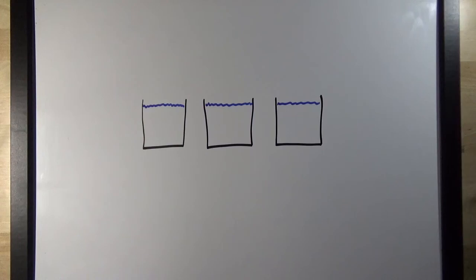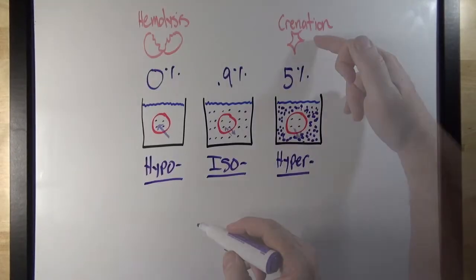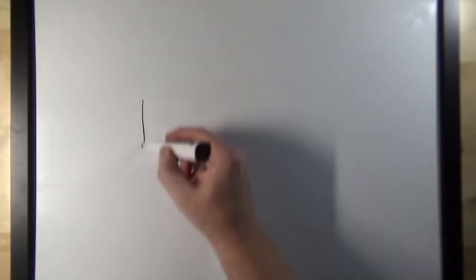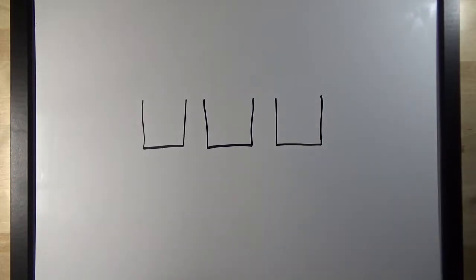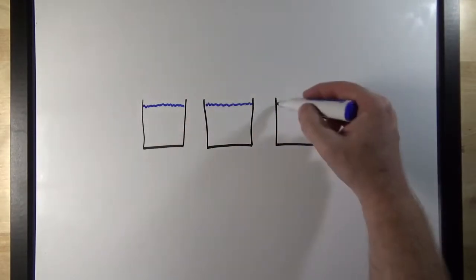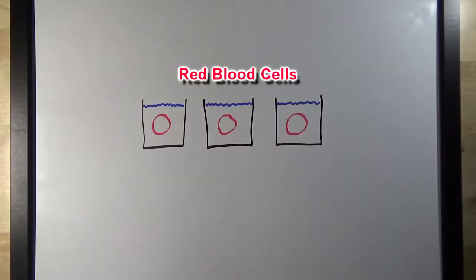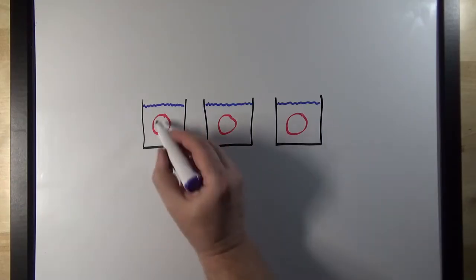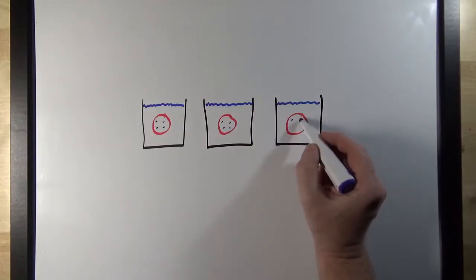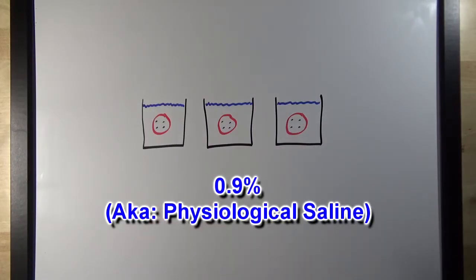What I'm going to do is draw out the red blood cell demonstration, where we put red blood cells in different salt solutions and see what happens to them. I'm going to start out by drawing three beakers. In each beaker I'm going to put water — the blue line at the top represents water. Into each beaker we're going to put red blood cells, and I'm only going to draw one representative red blood cell in each beaker. These red blood cells have a certain salt concentration in them, just like the cells of our body — and that salt concentration inside our cells is 0.9%.